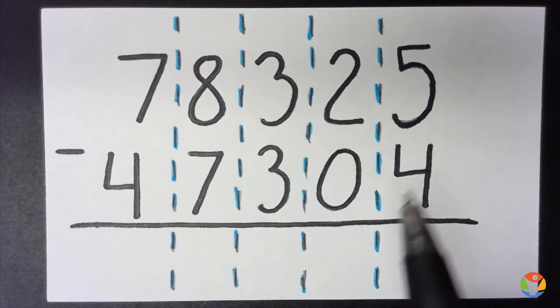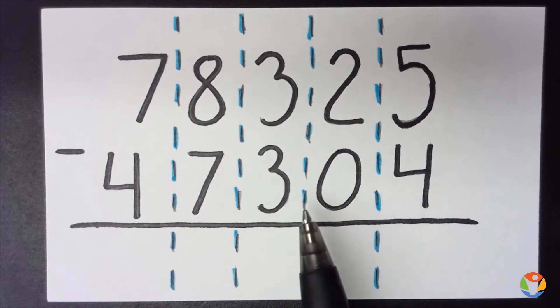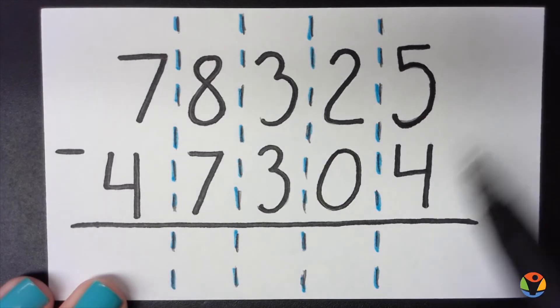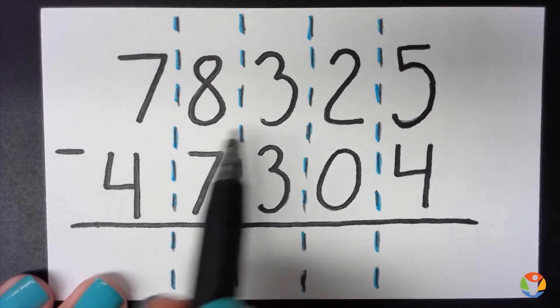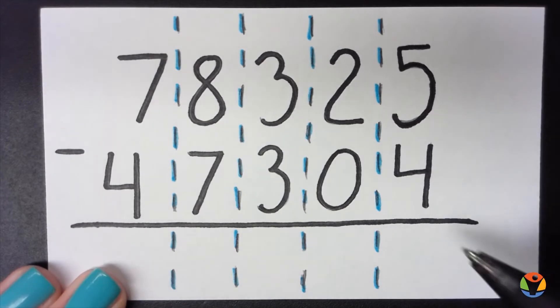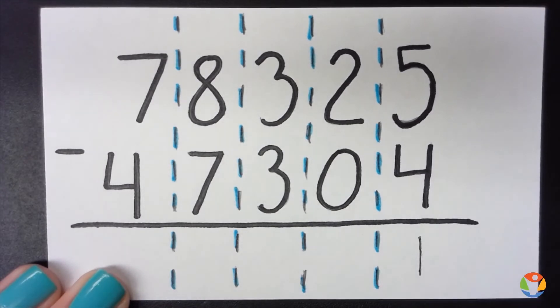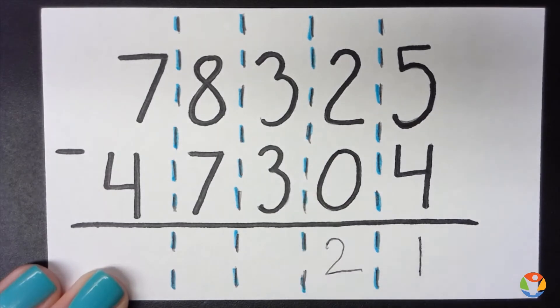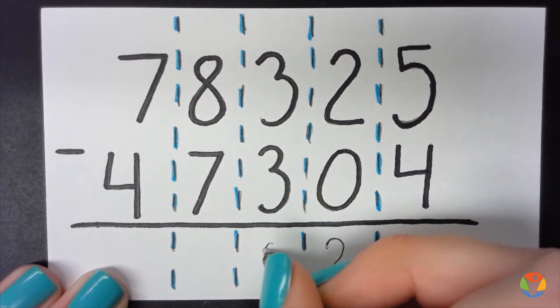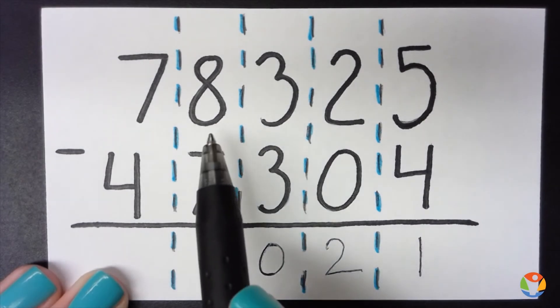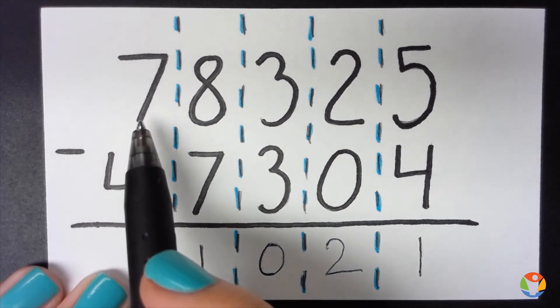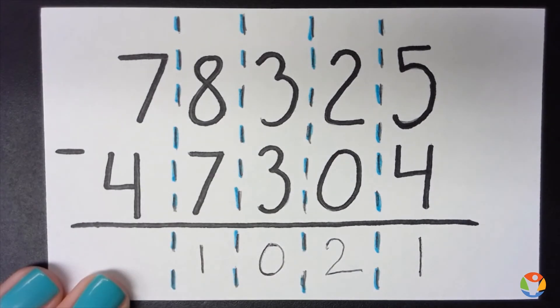Now we're going to go one place value at a time. More on top, no need to stop, so we can just go right through this. Five minus four is one, two minus zero is two, three minus three is zero, eight minus seven is one, seven minus four is three.